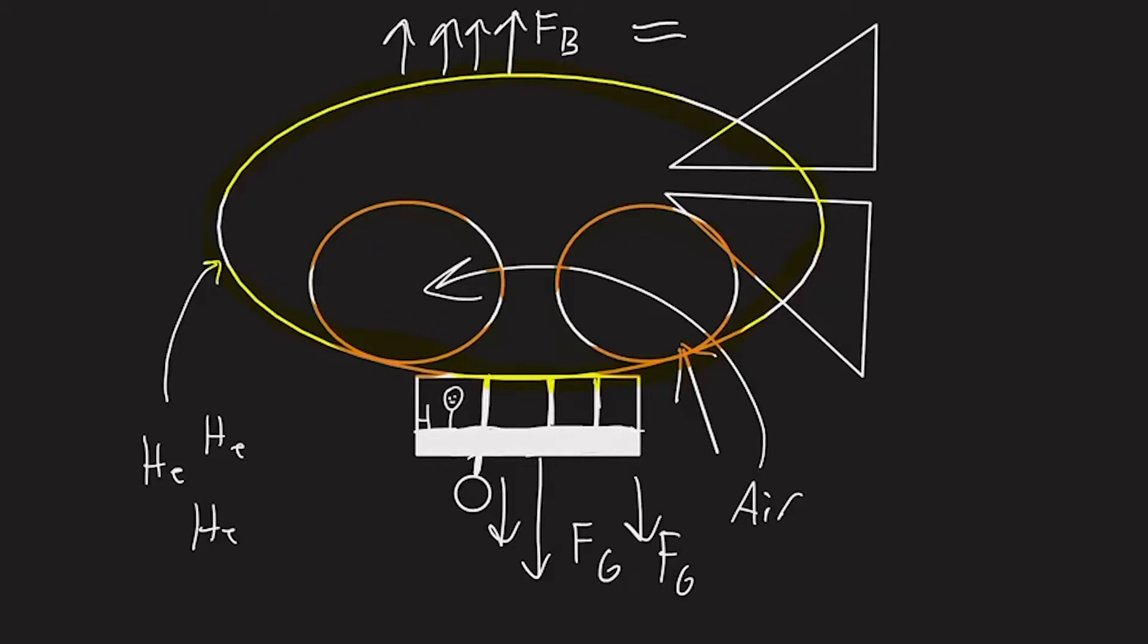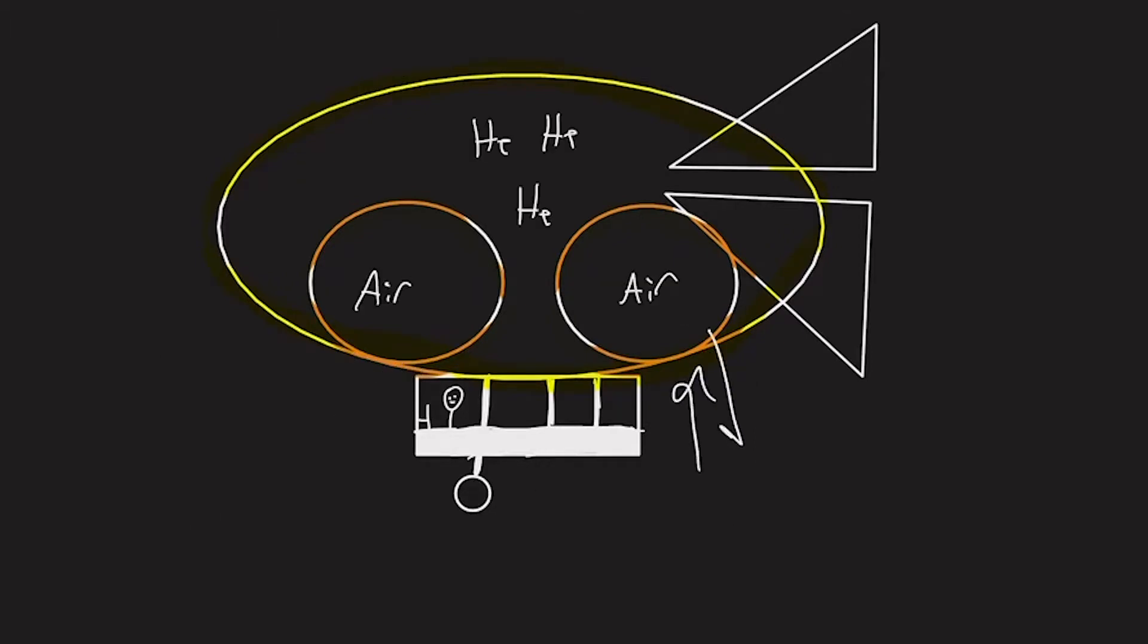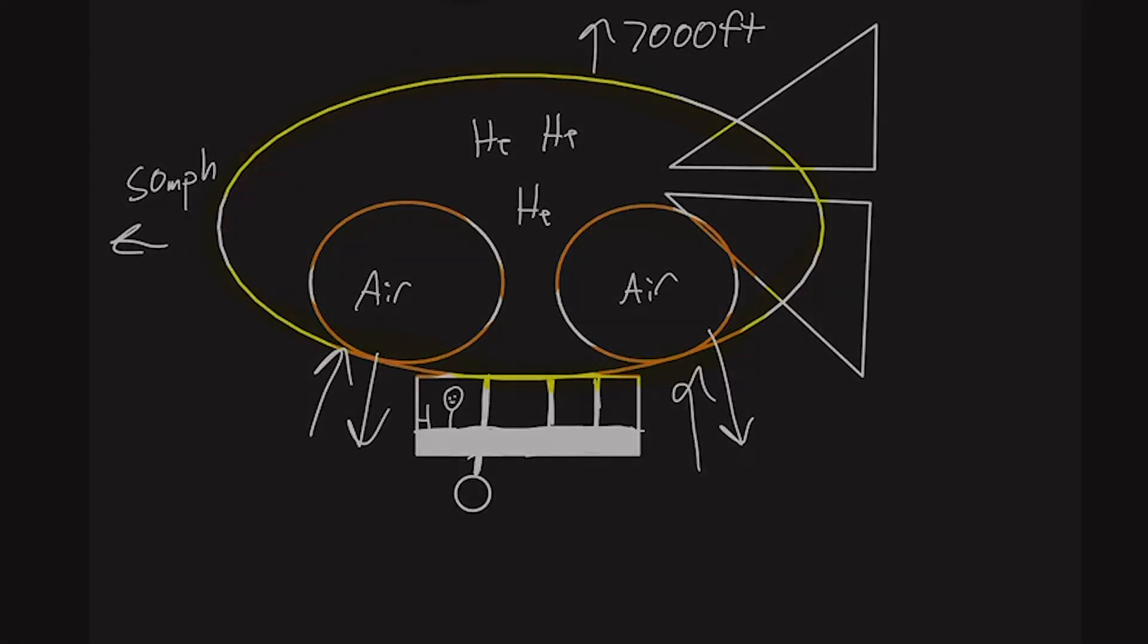To descend, the blimp pilot will pump more air into the ballasts, adding weight, thus causing the blimp to descend. During flight, the amount of air in the fore and aft ballasts can be adjusted for stability. Most blimps are able to fly up to 50 miles per hour, and at altitudes of up to 7,000 feet, using propeller engines for propulsion.